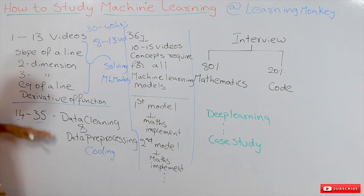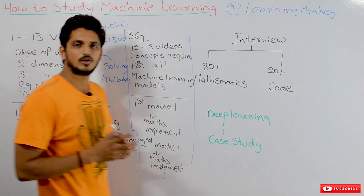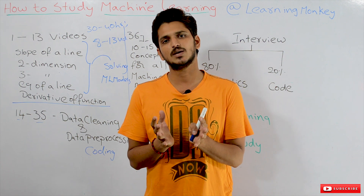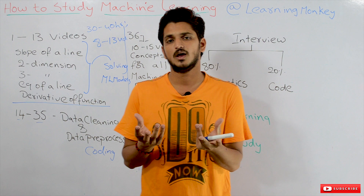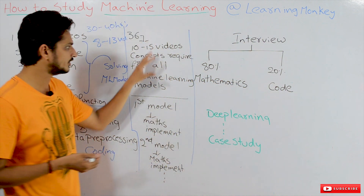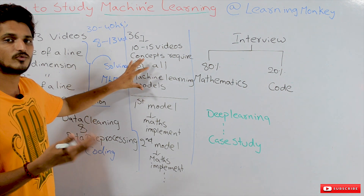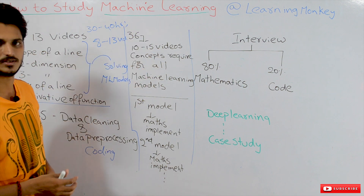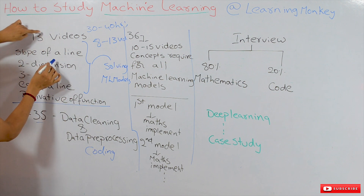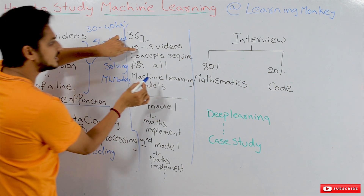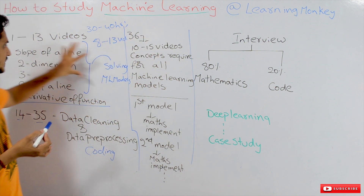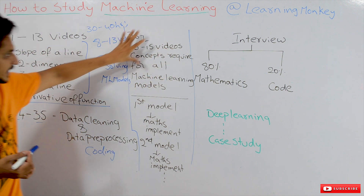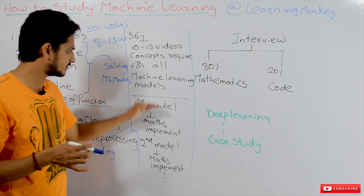From the 36th video onwards, we explain approximately 10 to 15 videos covering concepts required for all machine learning models. These are fundamental concepts for all ML models and are slightly dependent on the earlier mathematics. You may feel a little difficulty at this stage, but if you really understood the math, it is not that difficult.